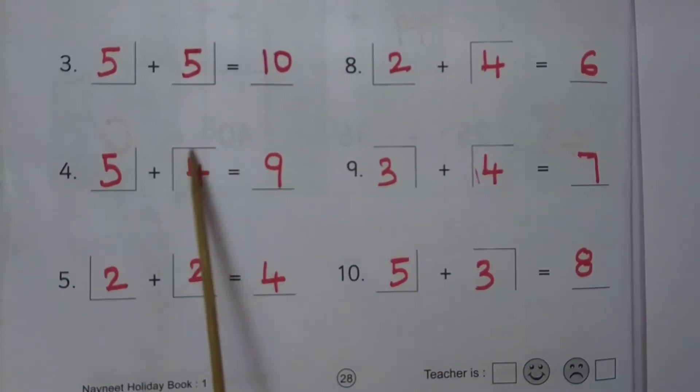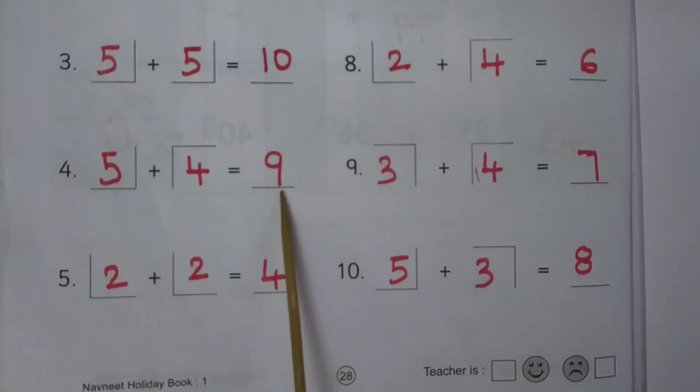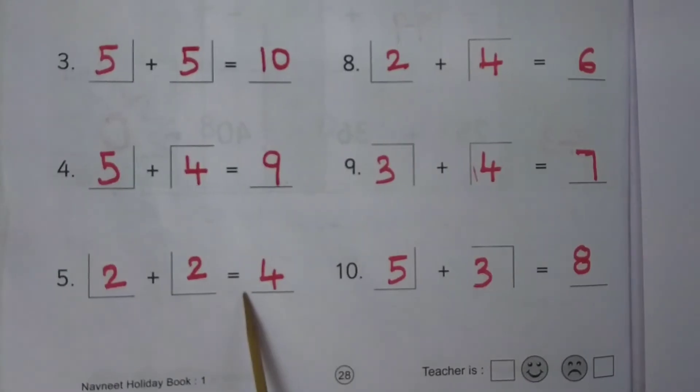5 plus 4 is equal to 9. 2 plus 2 is equal to 4.